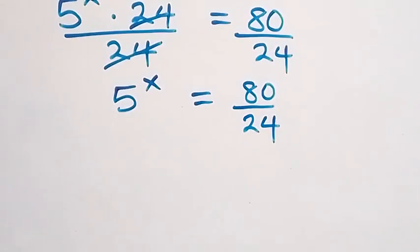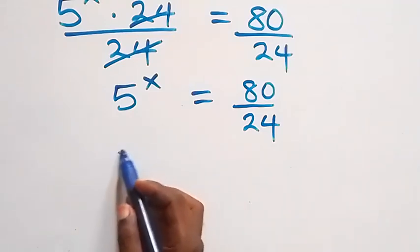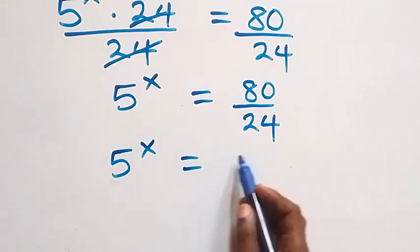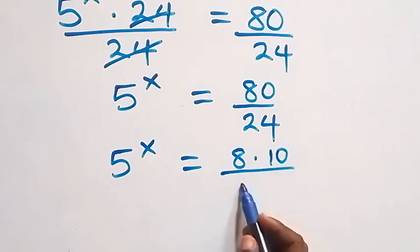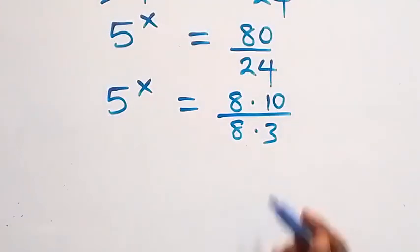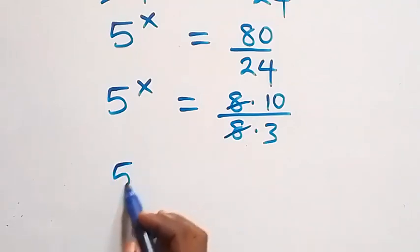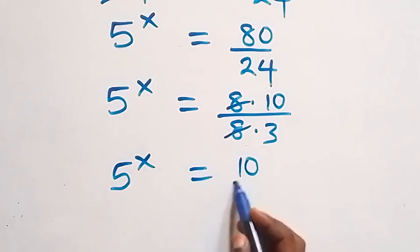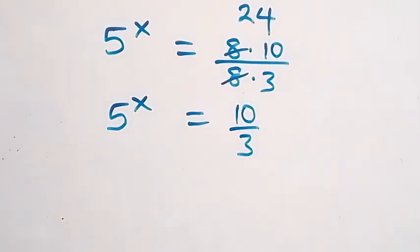We can write 80 over 24 as 8 times 10 over 8 times 3. The 8s cancel each other, and we have 5 raised to power x equals 10 over 3. From here, we take the log on both sides.